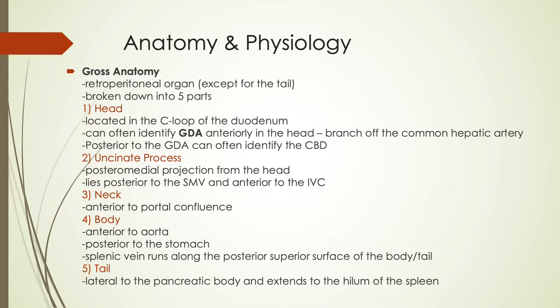The uncinate process is a posterior and medial projection from the head, and it lies posterior to the superior mesenteric vein and anterior to the IVC. The neck of the pancreas is seen anterior to the portal confluence, which is where the splenic vein and the superior mesenteric vein join together to form the main portal vein. The body of the pancreas is seen anterior to the aorta and posterior to the stomach, and the tail is lateral to the pancreatic body and extends to the hilum of the spleen.